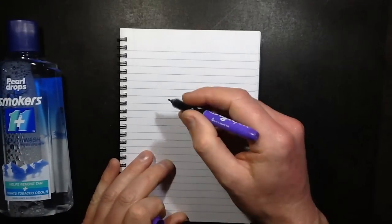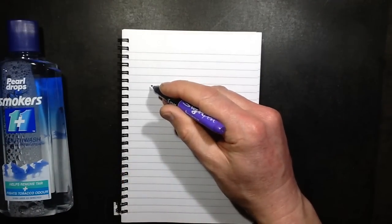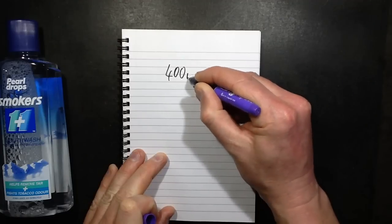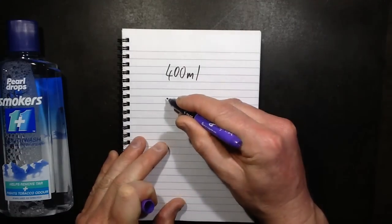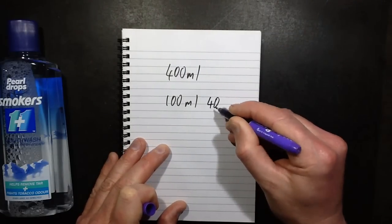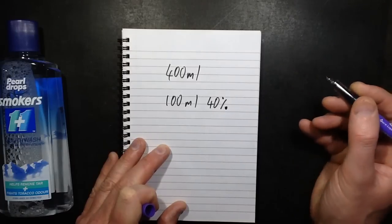It initially came out extremely high, it was off the scale, but at about, this is 400 millilitres, and I ended up with 100ml of roughly 40% alcoholic solution.